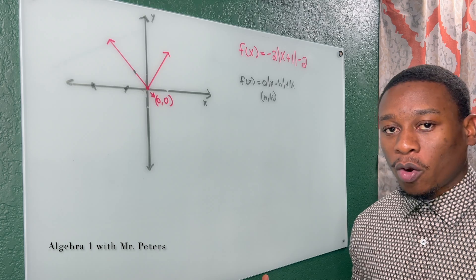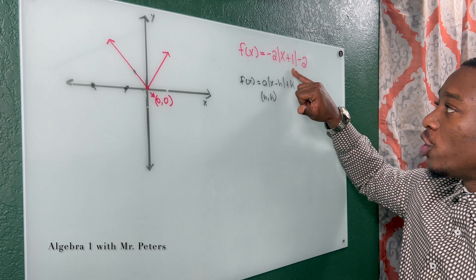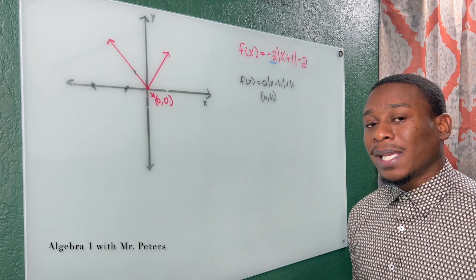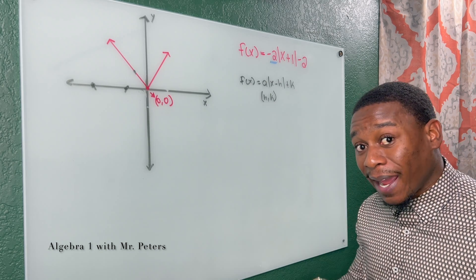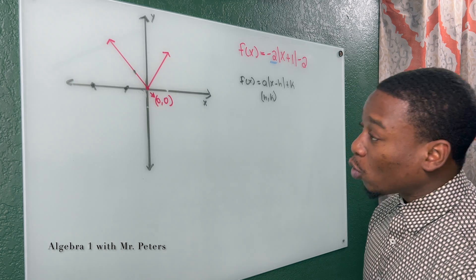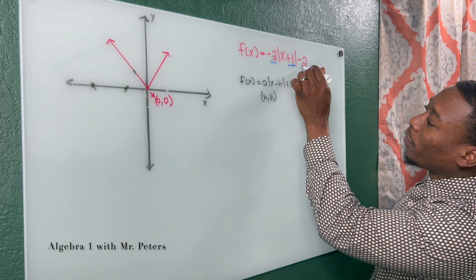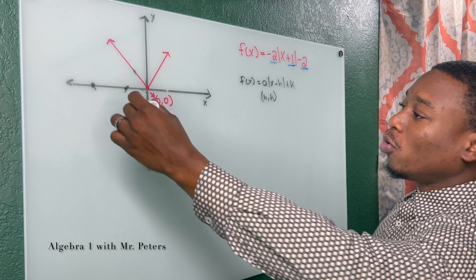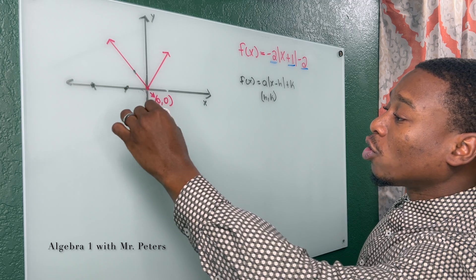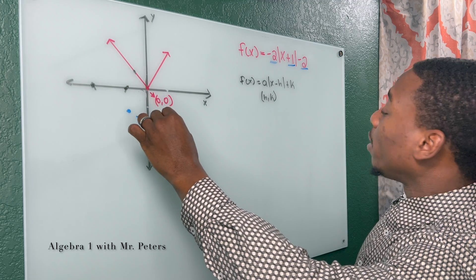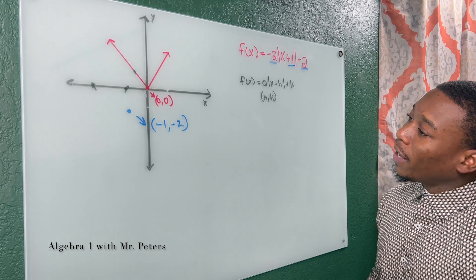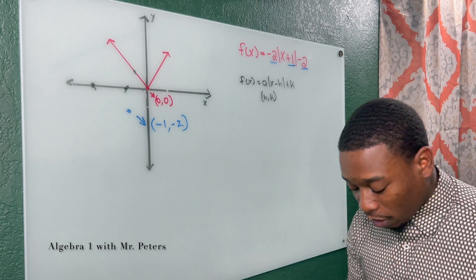In problem number two, now we're looking at a new absolute value function. And we have to pay attention to the fact that we do have an A, which means that this absolute value function is going to open down. But that's not the most important thing I want to focus on. So after we graph this, we have h, we have k. So they tell me that I moved to the left one, down two. So my new vertex is going to be at negative one, negative two. And we should know that this graph is opening down because of this negative in front.